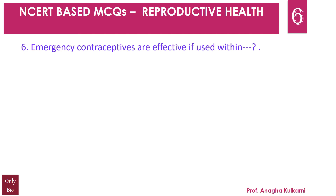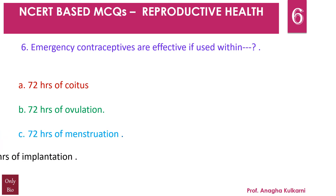Question number 6: Emergency contraceptives are effective if used within — A. 72 hours of coitus, B. 72 hours of ovulation, C. 72 hours of menstruation, D. 72 hours of implantation. The correct answer is A — 72 hours of coitus. Emergency contraceptives are effective if used within 72 hours of coitus because fertilization takes place 24 to 48 hours after coitus, and implantation takes place after 6 to 7 days. If the morning-after pill is taken after 72 hours, it is not as effective.